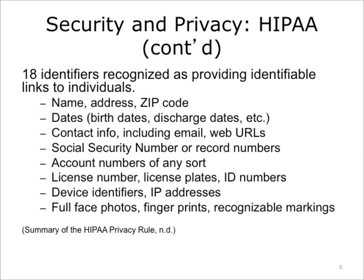4. Phone numbers. 5. Fax numbers. 6. Electronic mail addresses. 7. Social security numbers. 8. Medical record numbers. 9. Health plan beneficiary numbers. 10. Account numbers. 11. Certificate or license numbers. 12. Vehicle identifiers and serial numbers, including license plate numbers. 13. Device identifiers and serial numbers. 14. Web universal resource locators, URLs. 15. Internet protocol, IP address numbers. 16. Biometric identifiers, including fingerprints and voice prints. 17. Full face photographic images and any comparable images. 18. Any other unique identifying number, characteristic, or code — note this does not mean the unique code assigned by an investigator to code data.